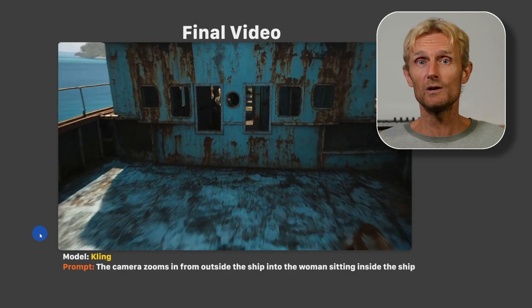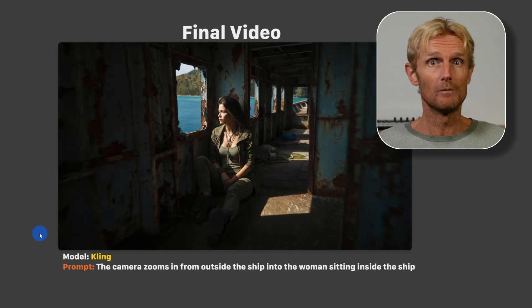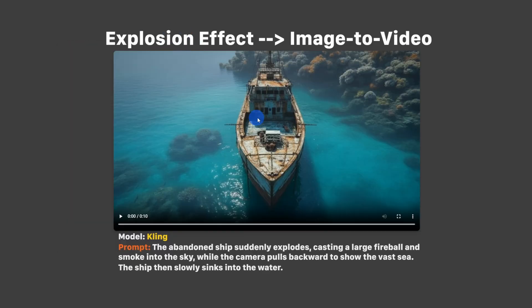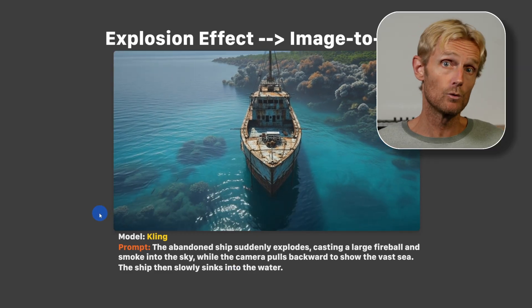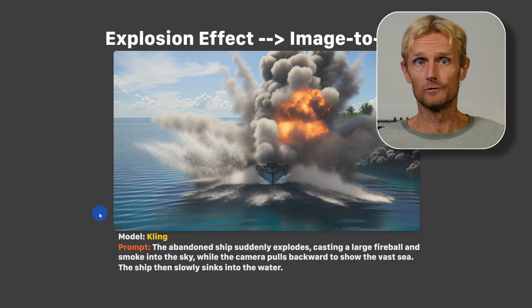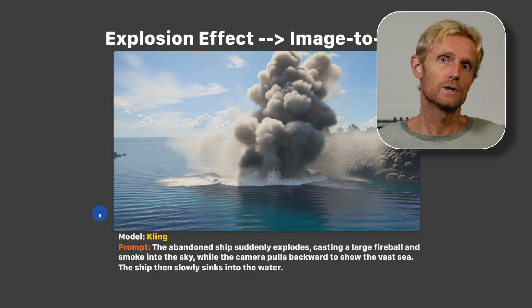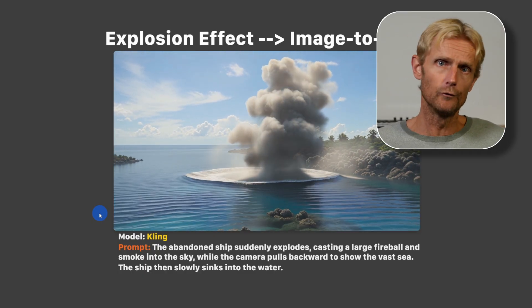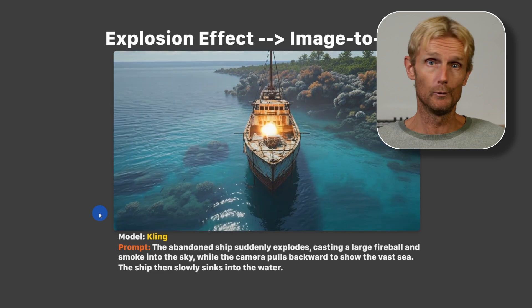You could fix the speed with the speed ramp effect if you want it to go faster. For the explosion effect I used the same image but with the image-to-video model from Kling, because for this effect that works much better. I used the prompt: 'the abandoned ship suddenly explodes casting a large fireball and smoke into the sky while the camera pulls backward to show the vast sea. The ship then slowly sinks into the water.' I'm quite impressed — sure the ship sinks a little too fast, but it's definitely usable in a project where you need an explosion effect.